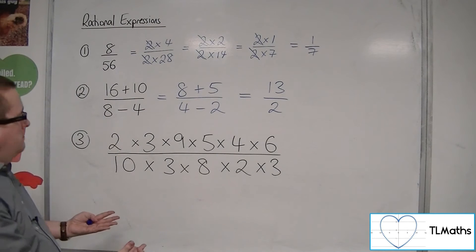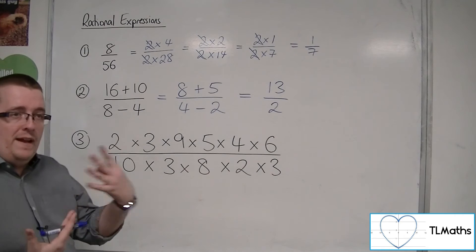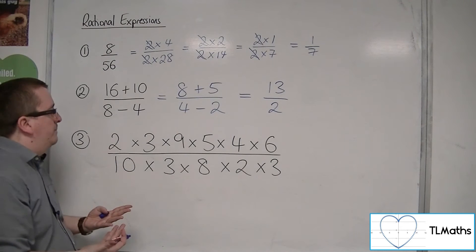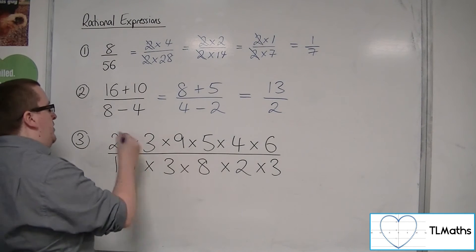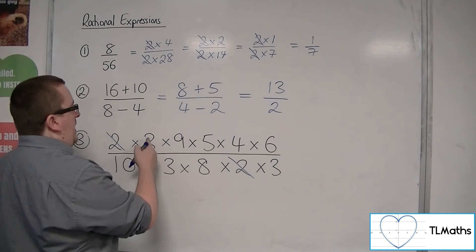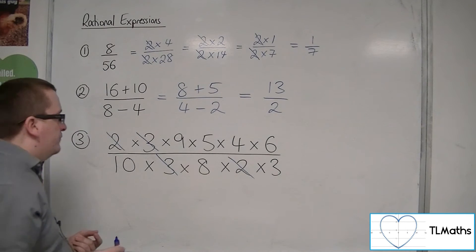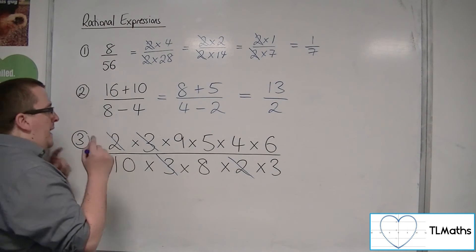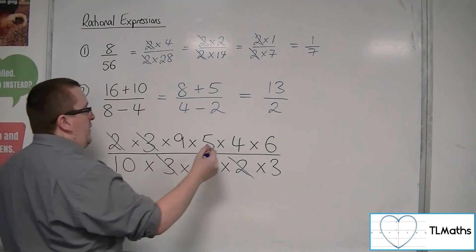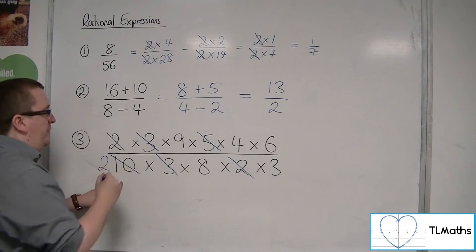Now for number 3, we have something that looks quite horrible, but it's all about seeing common factors in the numerator and denominator. It's similar to how number 1 was working. So the fact that I can see a 2 and a 2, a common factor, they can disappear. I've also got a 3 and a 3, so they can go as well. Now, what else do I have? Well, here I've got a 10 and I've got a 5. So these both have a common factor of 5. So if I divide top and bottom by 5, that 5 will disappear. And if I divide 10 by 5, I'll be left with 2.